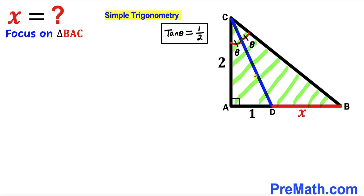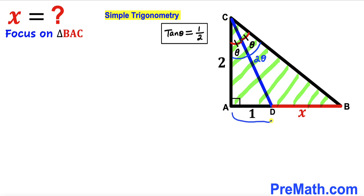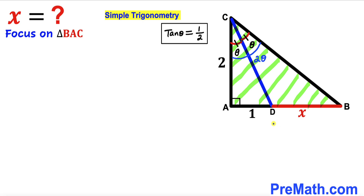Now let's focus on the big right triangle BAC. The whole angle ACB is theta plus theta, which gives us 2 times theta. Furthermore, the whole segment AB equals the sum of AD and BD, which means 1 plus X. So side AB length turns out to be X plus 1.